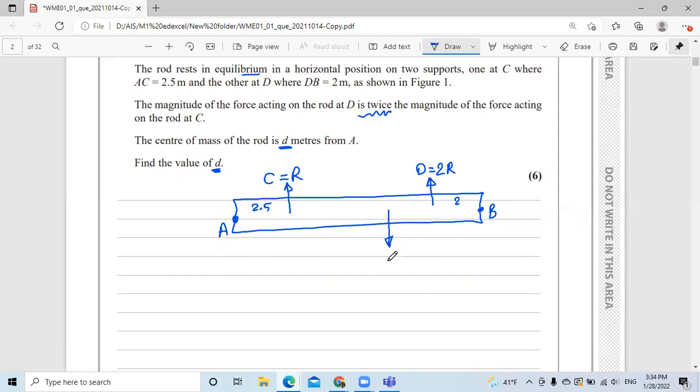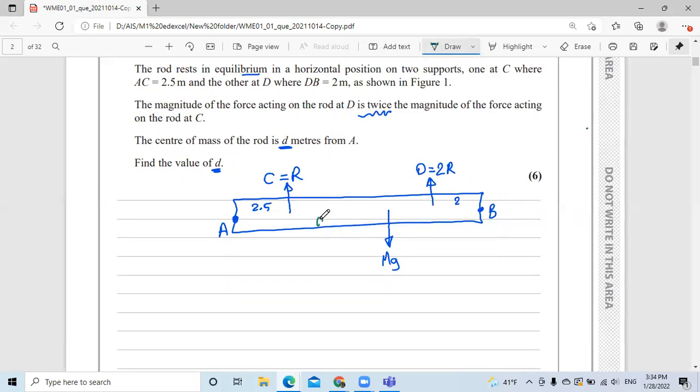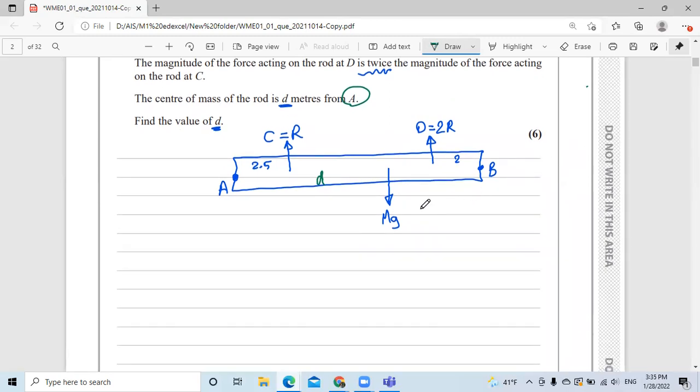So this is twice R or 2R, and here R, and the weight is closer to it. So somewhere here the weight, which is M multiplied by G. Now, we have this distance from A to the center of mass. They ask about it, from A. So we know that we have several ways to answer the question. First, we have two formulas: moment clockwise equal moment anticlockwise, and forces up equal forces down.